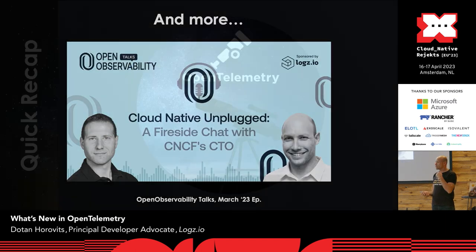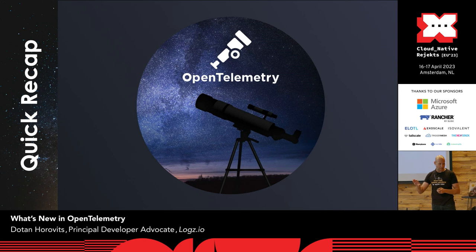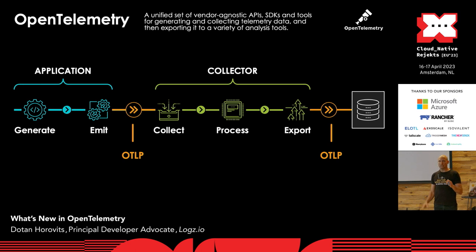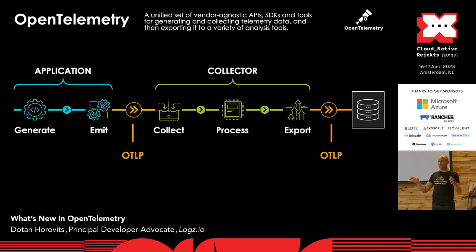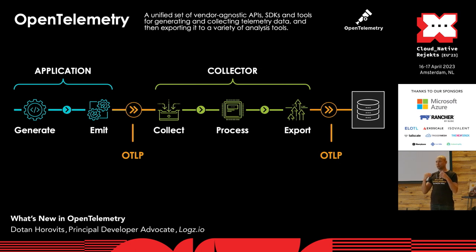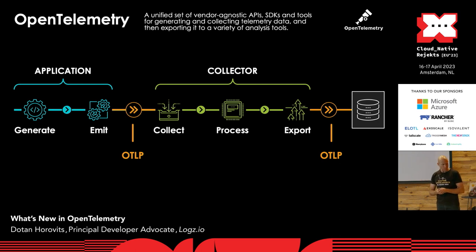Before I move to the technical updates, I want to level-set the knowledge of the main components so I can refer to them. OpenTelemetry in a nutshell provides a unified set of APIs, SDKs, and tools for generating telemetry out of your project — the bluish part on the left. Then a unified collector to collect telemetry from applications and infrastructure and process it — the green part. And then a standardized way to represent and transmit it to any backend you wish.